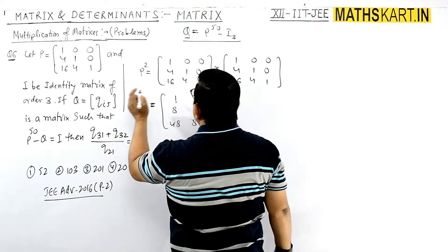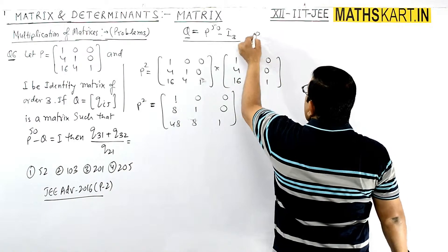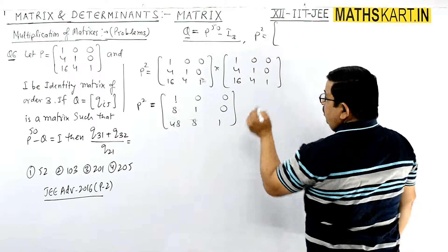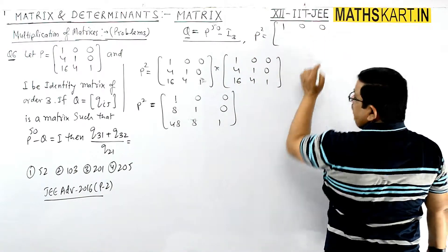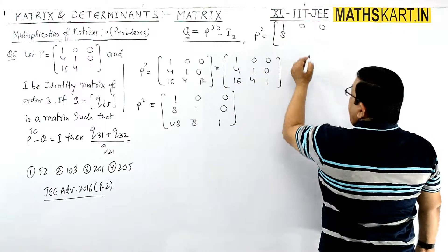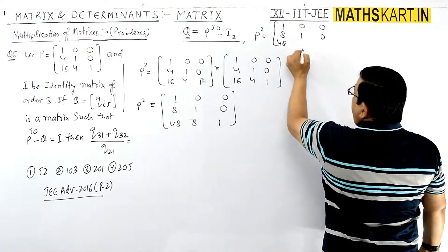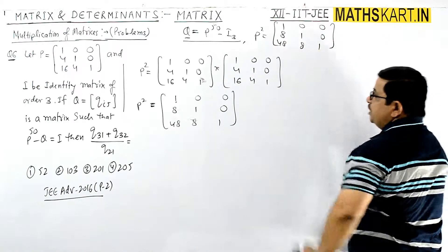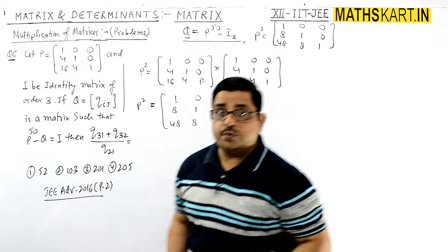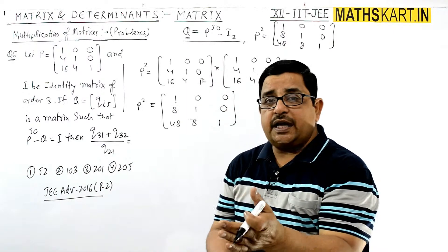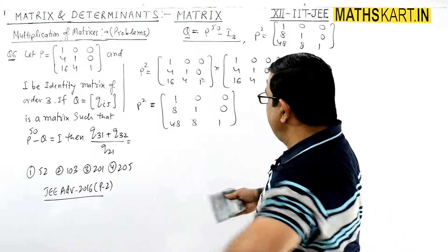So P squared turns out to be [1 0 0 / 8 1 0 / 48 8 1]. Now we need to find P cubed. After finding P cubed we can generalize to P to the power n, and then find P to the power 50.